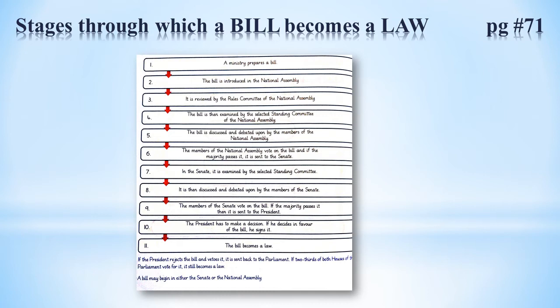Stage five: The bill is discussed and debated upon by the members of the National Assembly. Sab members ispere apna point of view share karte hain. Stage six: The members of the National Assembly vote on the bill, and if the majority passes it, it is sent to the Senate. Stage seven: In the Senate, it is examined by the selected Standing Committee, jo isse deeply examine karti hai.